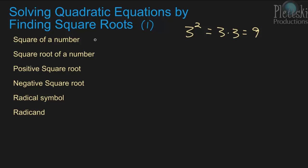That's finding the square of a number. Finding the square root of a number is actually doing the opposite — finding what number times itself gives you the number that you want to find the square root of.